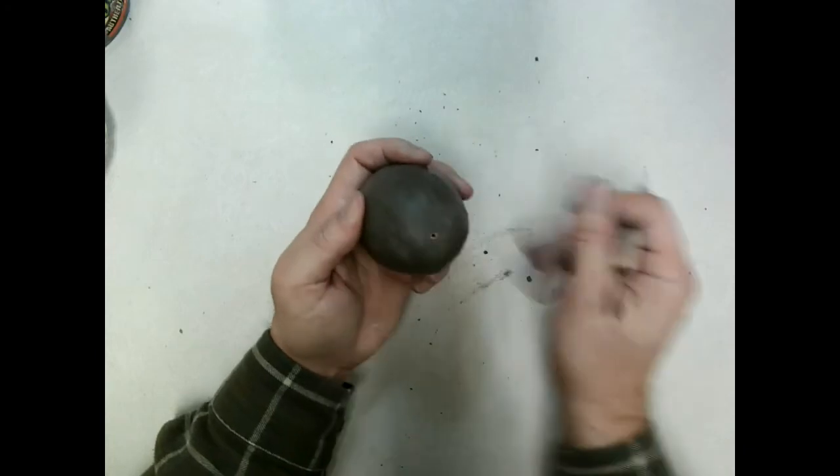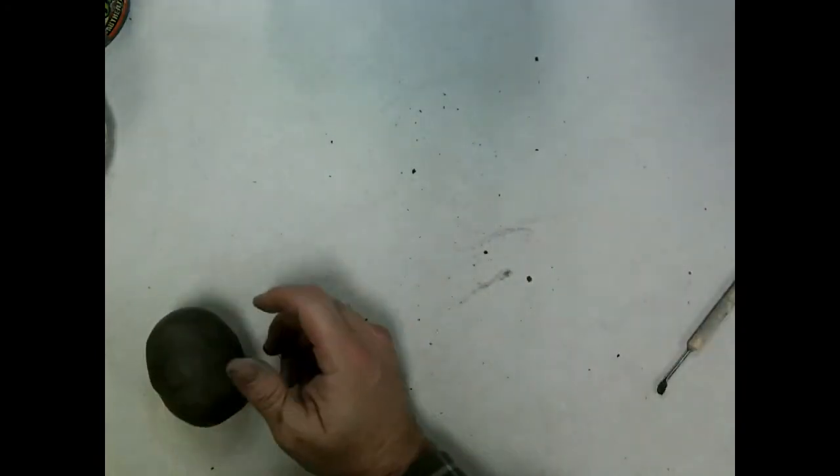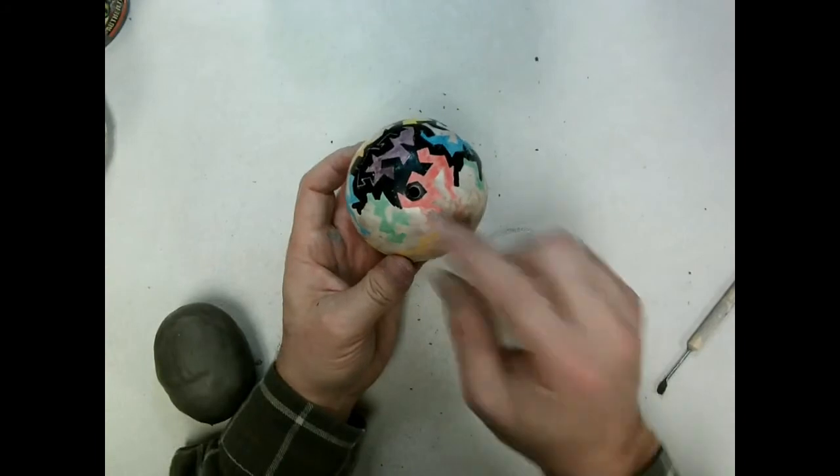If you want, you can make your hole a little bit larger. For example, on this one here, the hole is about that large. You simply want to make sure that the hole is not so large that the rattles are going to fall out.